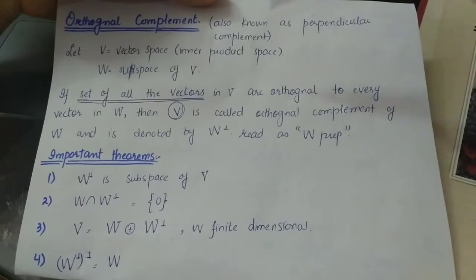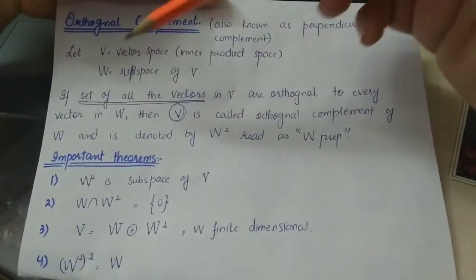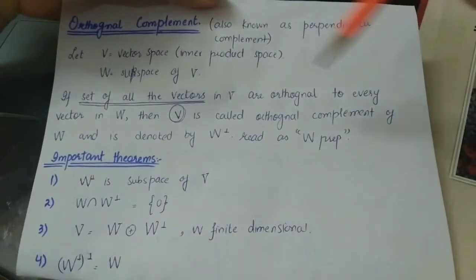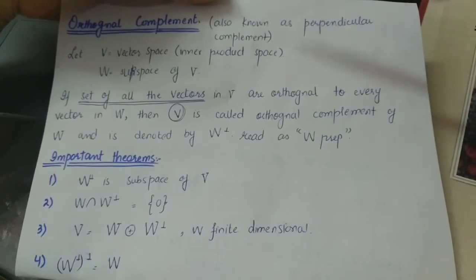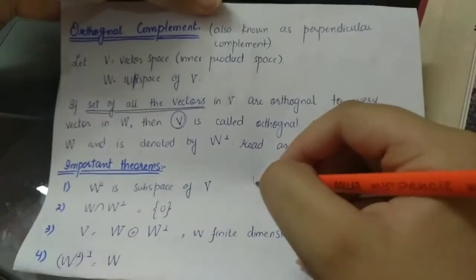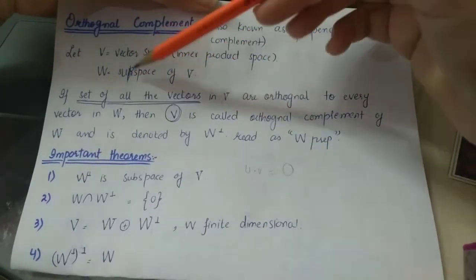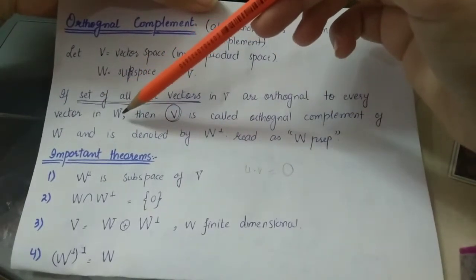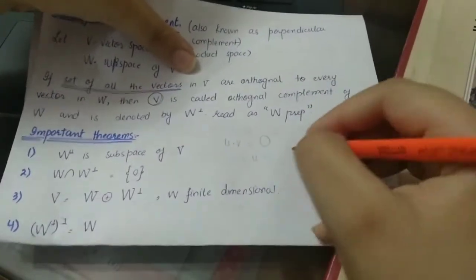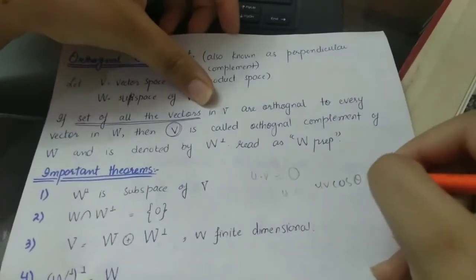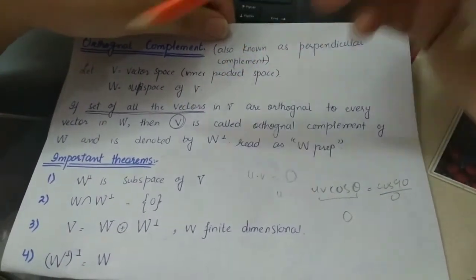So what this is saying is: all the vectors in V — all the sets of vectors — if they are all orthogonal to every vector inside W, then we say V is the orthogonal complement of W. The meaning of orthogonal is basically perpendicular, and if two vectors are orthogonal, their dot product is zero. This means that the dot product of every vector in V taken with every vector in W will always give zero, because orthogonal means perpendicular, and u·v = |u||v|cosθ, and when perpendicular, cos90° = 0, making the whole term zero.